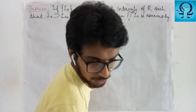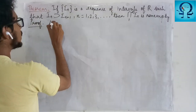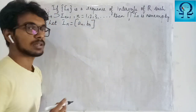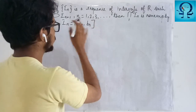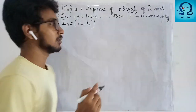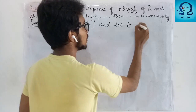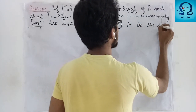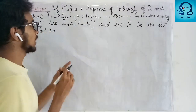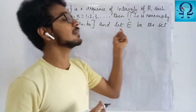Let us get into the proof. Let me take I_n to be the interval [a_n, b_n], for n = 1, 2, 3, and so on. And let me take E to be the set of all a_n. So in those intervals, I am taking only the left endpoints to form my set E.